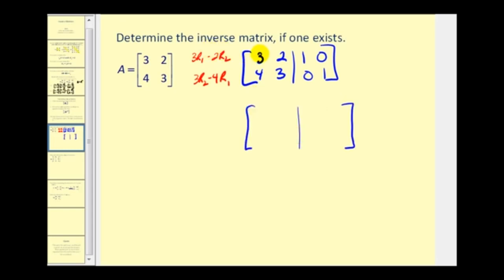So for row one: three times three minus two times four is nine minus eight, that's one. Three times two is six, minus two times three is six — six minus six is zero. Three times one minus two times zero is three. Three times zero minus two times one is negative two.